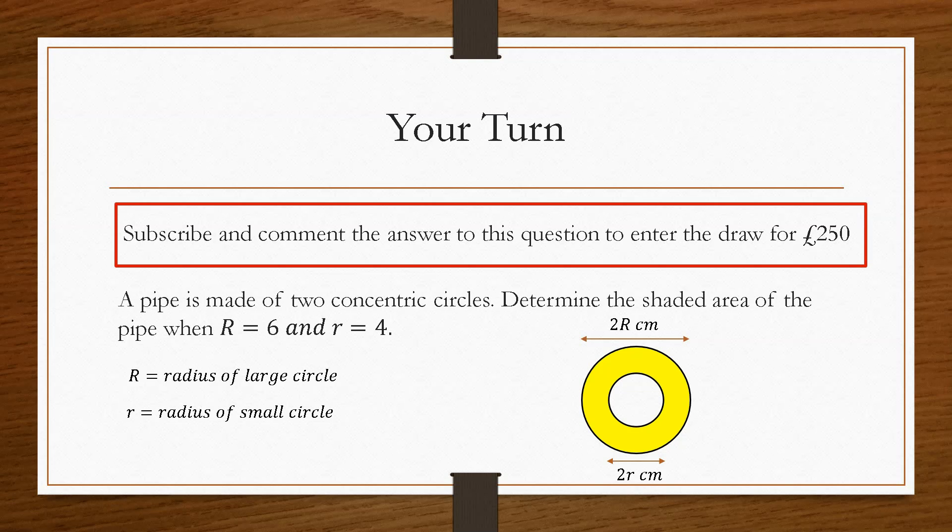So this question here to give you a hint is you would have to create the equation for the area first using the difference of two squares method and then substitution of the capital R and the small r. So what you are essentially finding is the area of the shaded region which is in yellow.